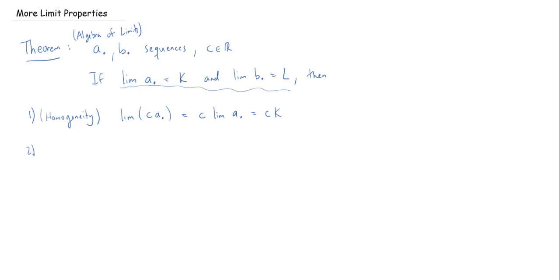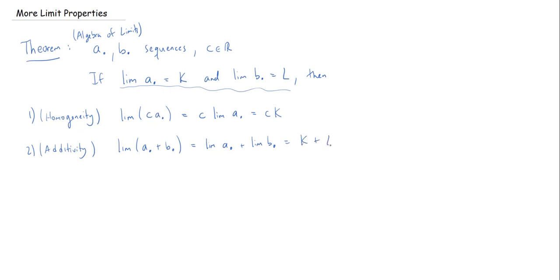The second statement is sometimes referred to as additivity. If I take the limit of the sequence formed by adding sequences a and b together term by term, the claim is that it also converges, and it converges to precisely the sum of the limits of the original two sequences — in this case K plus L.